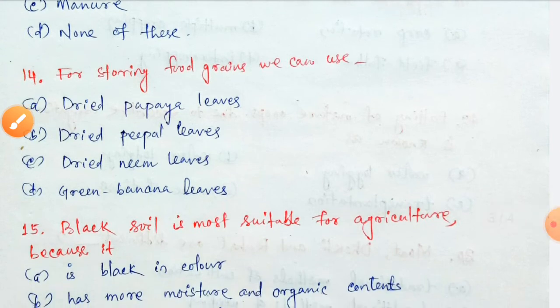Next question: for storing food grains, we can use — dried papaya leaves, dried peepal leaves, dried neem leaves, or green banana leaves?